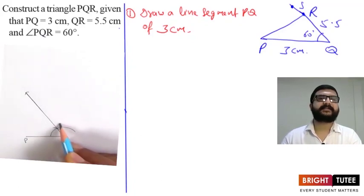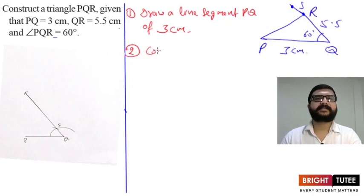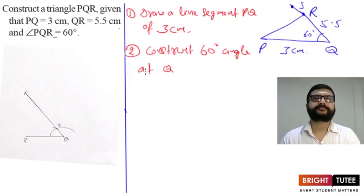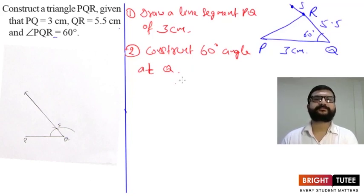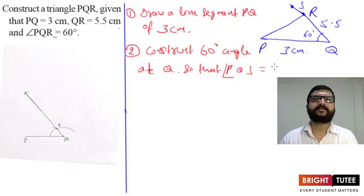Let's say this ray is QS. So what we have done is constructed a 60 degree angle at Q. We write this step as: construct a 60 degree angle at Q, so that angle PQS is equal to 60 degrees.